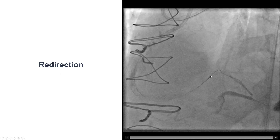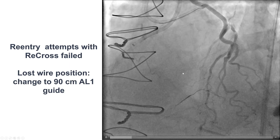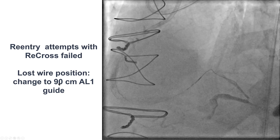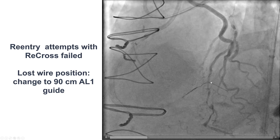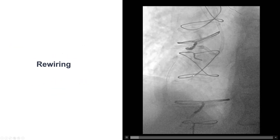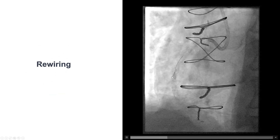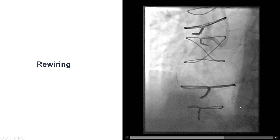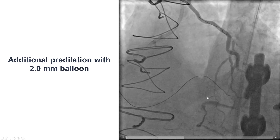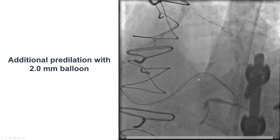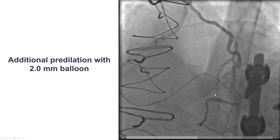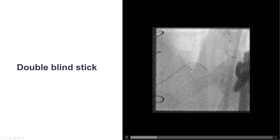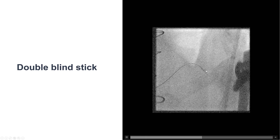We redirected the Gladius Mongo into the posterior lateral and tried re-entry, but then lost everything and had to remove the guide. This was a good opportunity to change to a 90 centimeter AL1 guide catheter that helped us reach that portion of the coronary artery. We rewired, and advancing a knuckle guide wire was fairly quick given prior ballooning. We had a lot of difficulty again delivering a Stingray balloon, trying several times, but eventually delivered a new one — the third Stingray balloon — to the re-entry zone in the right posterior lateral.